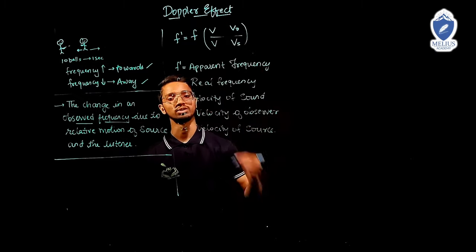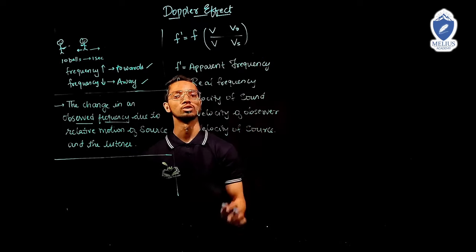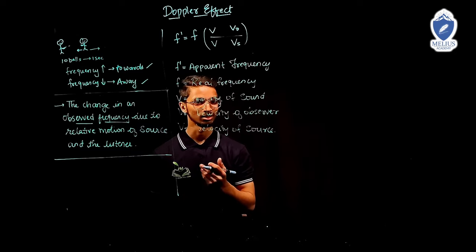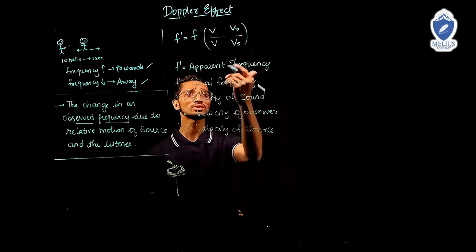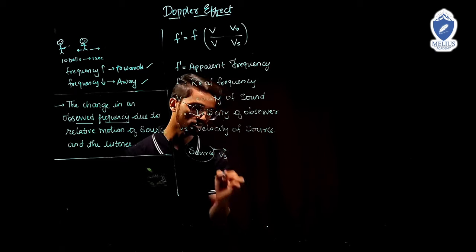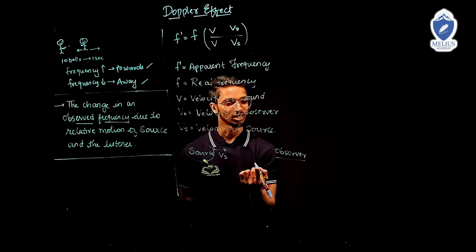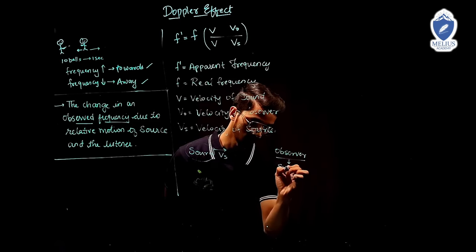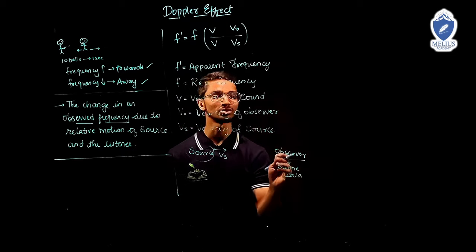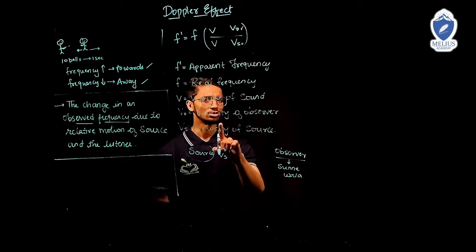How to remember: V_O should come in the numerator and V_S in the denominator? We can remember it like this — O comes before S alphabetically, so O goes upward. Or we can remember using a Hindi mnemonic: 'Sunane wala bada hai ya sunane wala bada hai?' — the observer (sunane wala, the listener) is bigger. So V_O will be upwards and V_S will be downwards. Now you know how to remember the formula.